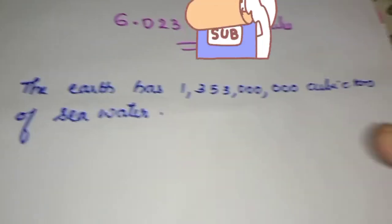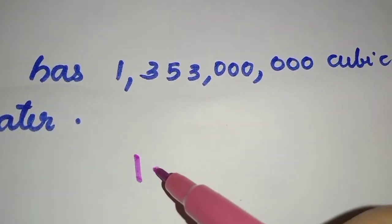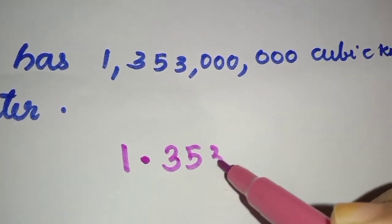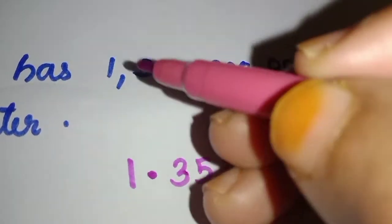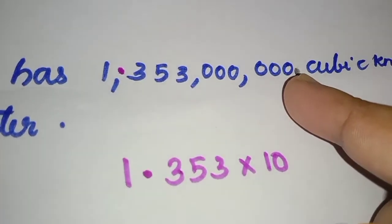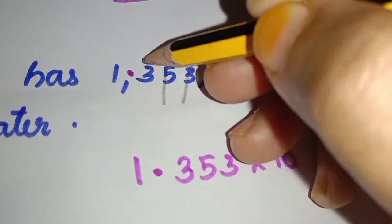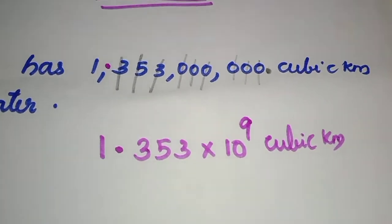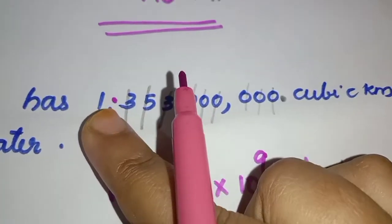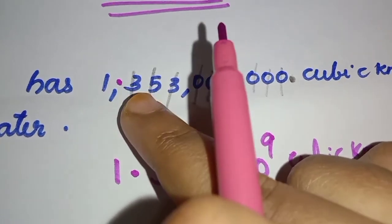The sea has 3 cubic kilometers of sea water. We use the standard formula: take the first number, place the decimal, then into 10 to the power. We count: 1, 2, 3, 4, 5, 6, 7, 8, 9. The answer is 3 × 10^9 cubic kilometers.